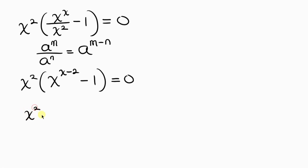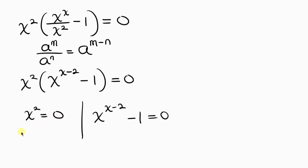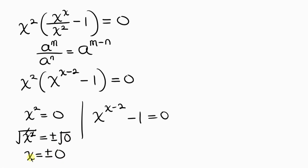We have two cases. The first case is x² equals 0. Solving this by taking the square root of both sides gives x equals plus or minus the square root of 0, which is 0. So one solution for x is 0.